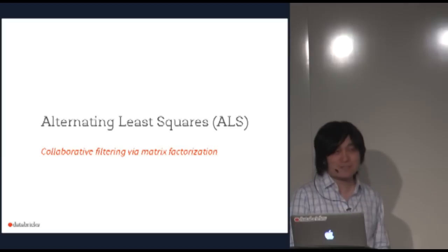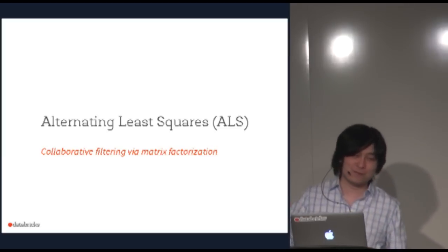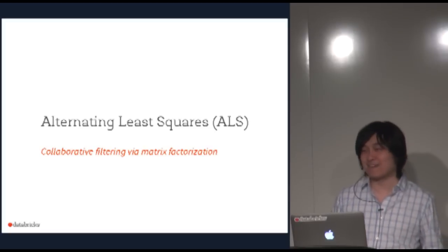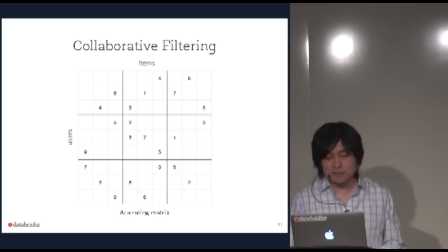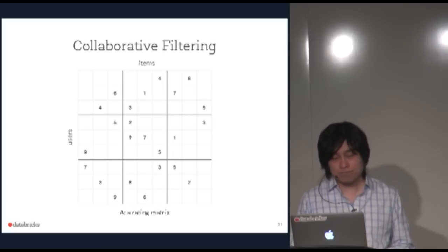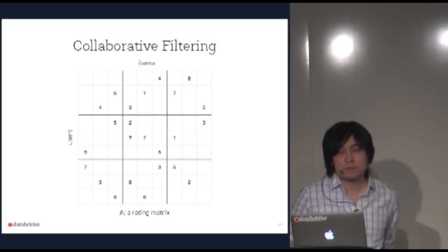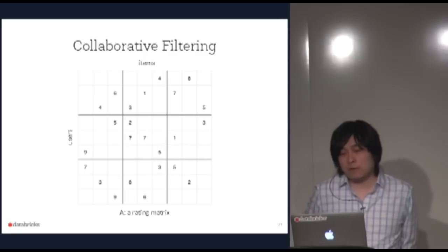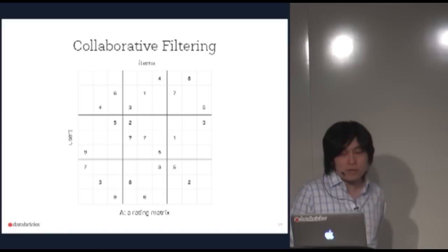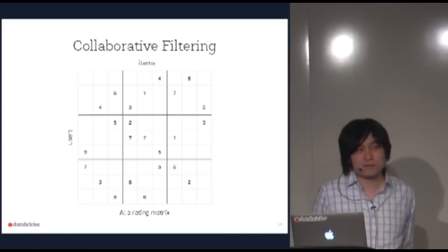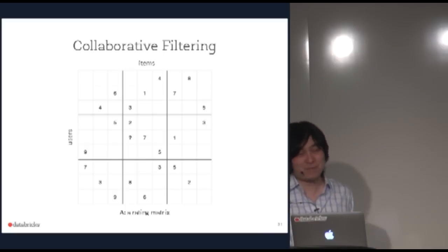Now let's go to the second part: how we optimize algorithms for scalability. I'll use alternating least squares as the example, since I've spent considerable time optimizing it. ALS is for collaborative filtering. You have a rating matrix with users, items, and observed ratings — and you want to predict a missing rating, like filling in a Sudoku.